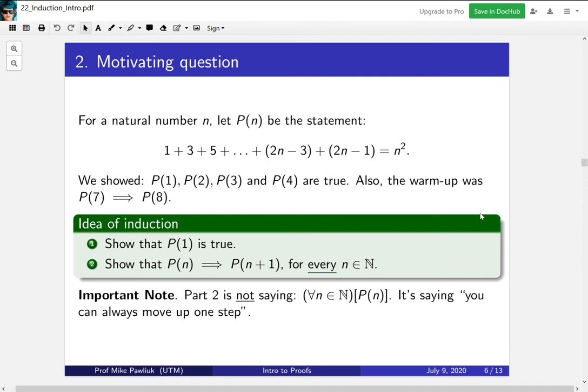One important note, part 2 is not saying that p(n) is true for all n. Part 2 is saying that you can go up one step, that you have an implication. Just because an implication is true doesn't mean that the conclusion is always true. You need this first part as well.